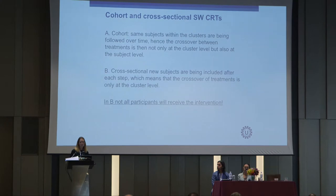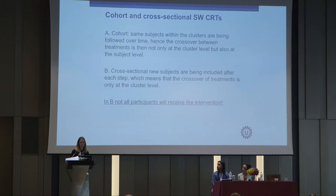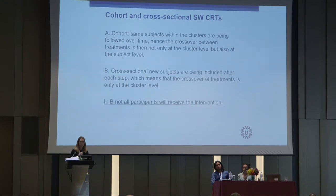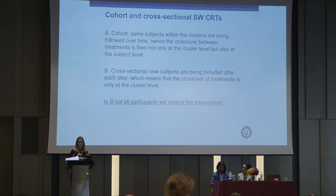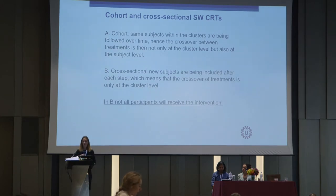There are two types of stepped wedge trial designs. One is a cohort form, in which the same subjects within the clusters are being followed over time, so the crossover between treatments is not only at a cluster level but also at a subject level. Then there is the cross-sectional form, in which new subjects are being included after each step, meaning the crossover of treatments is only at a cluster level.